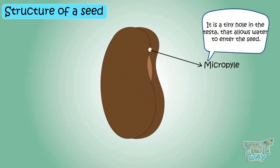There is a tiny hole in the testa opposite the tip of the radicle that allows water to enter the seed. It is known as the micropyle.